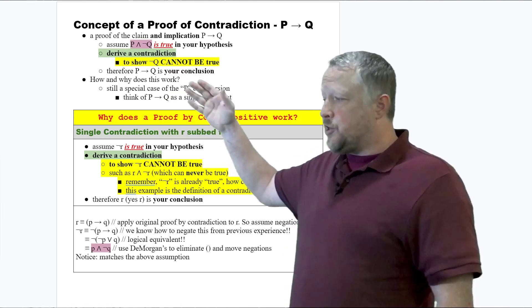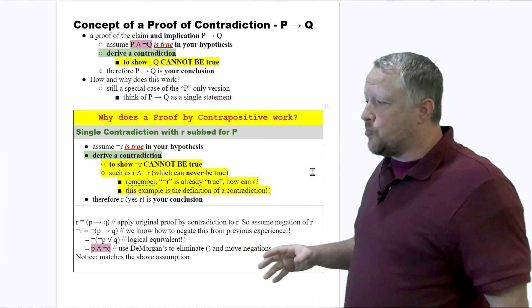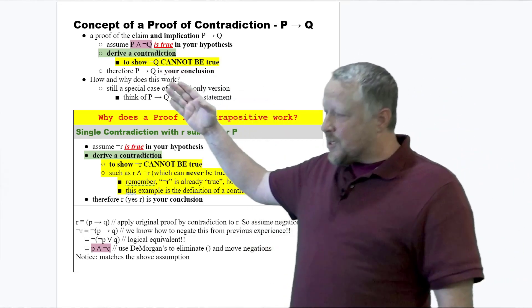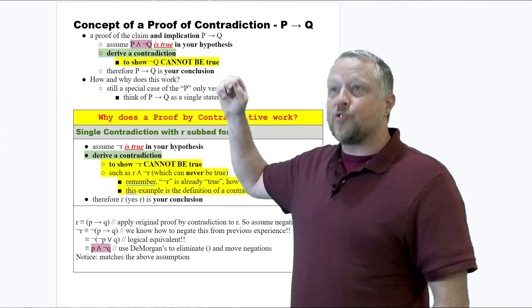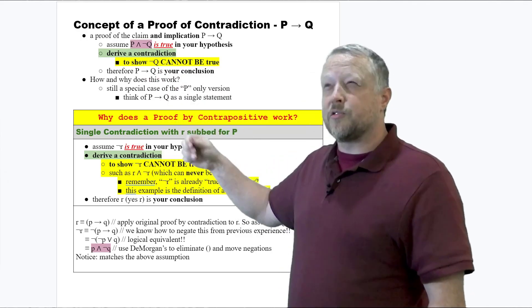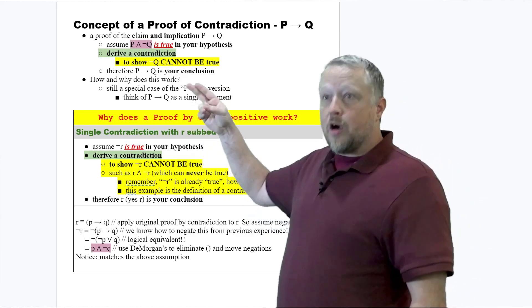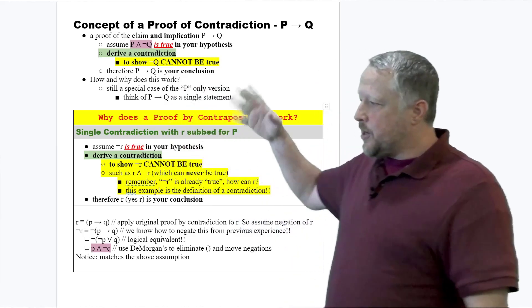We're going to show that negated Q just cannot be true, and therefore, it has to be P implies your negated, sorry, or negated of a negation called contradiction. Wow! Our original Q that was true is your conclusion.